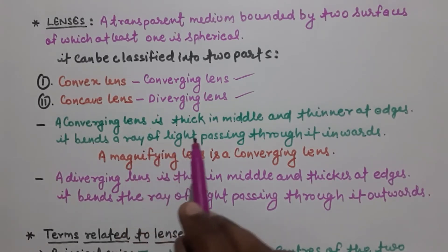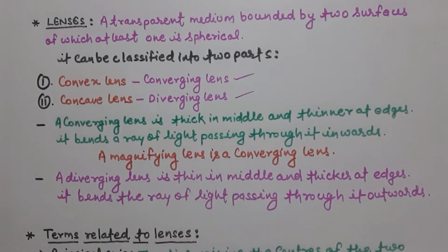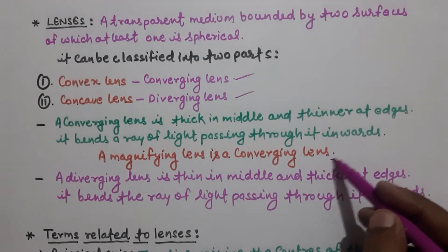Converging lens is thick in middle and thinner at edges. It bends a ray of light passing through it inwards. A magnifying lens is a converging lens.